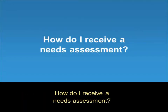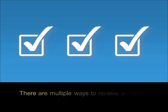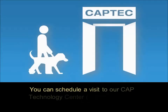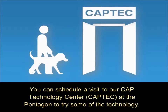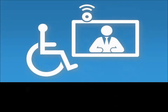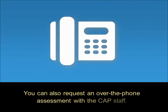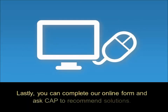How do I receive a needs assessment? There are multiple ways to receive a needs assessment from CAP. You can schedule a visit to our CAP Technology Center, CAP Tech, at the Pentagon to try some of the technology. If you can't come to CAP Tech, you can request a video teleconference assessment with our CAP Tech staff. You can also request an over-the-phone assessment with the CAP staff. Lastly, you can complete our online form and ask CAP to recommend solutions.